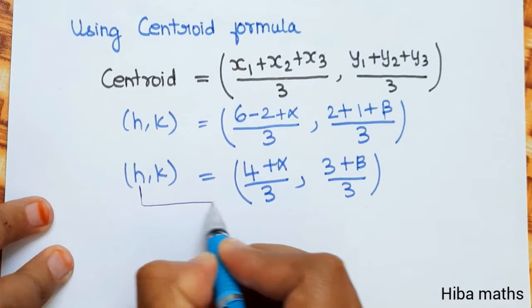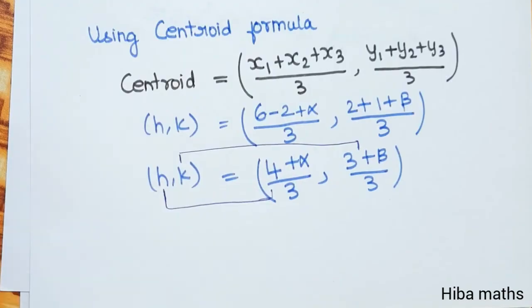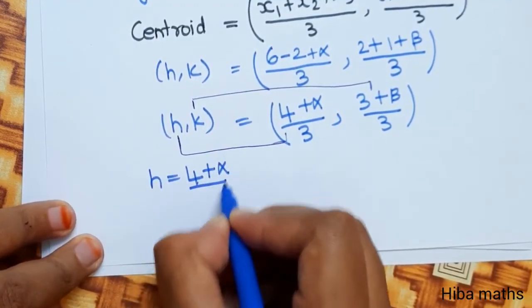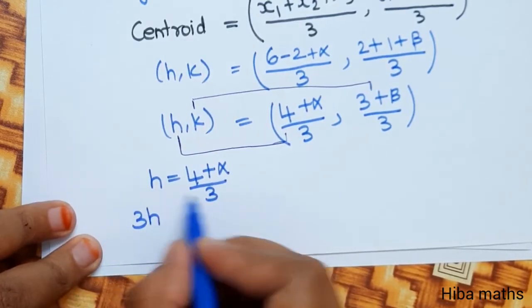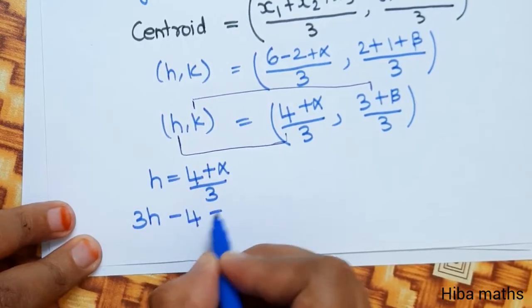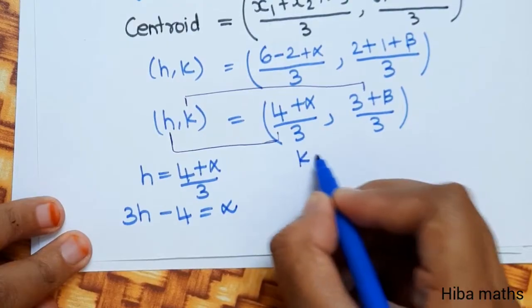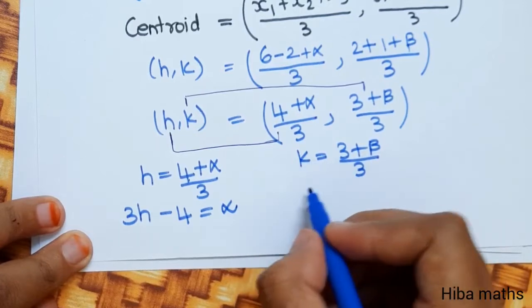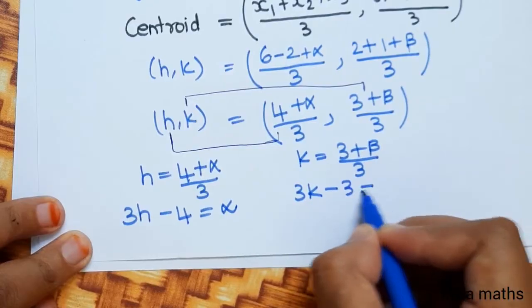Comparing x and y coordinates: H = (4 + α) / 3, so 3H = 4 + α, giving α = 3H - 4. And K = (3 + β) / 3, so 3K = 3 + β, giving β = 3K - 3.